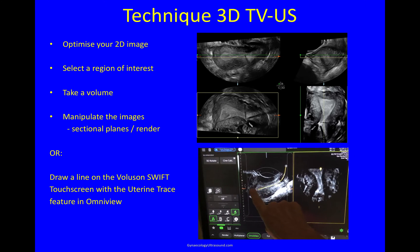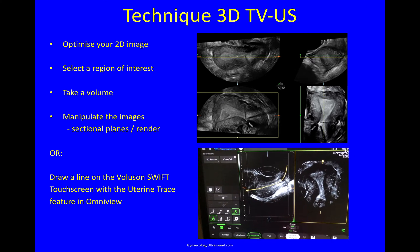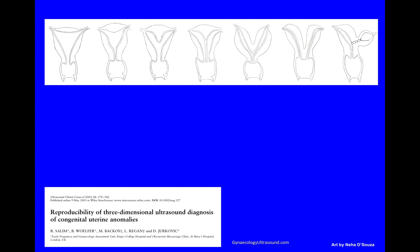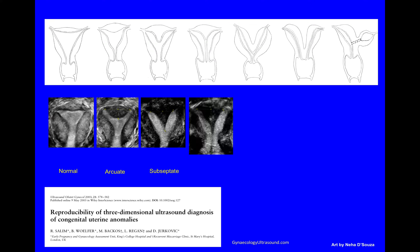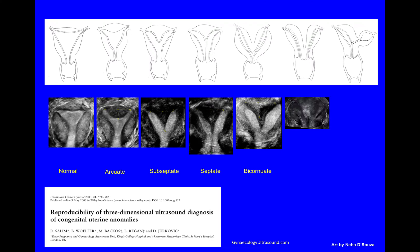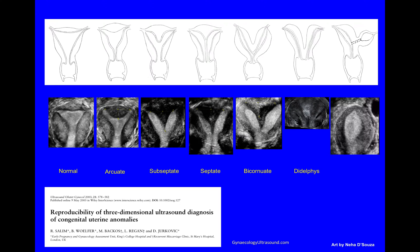There's the longitudinal view of the uterus and there is the coronal plane. Which classification system you use depends on your personal preference — there are many available. This is the one we use: here you can see a normal uterine cavity, an arcuate cavity, a subseptate uterus, a septate uterus where the septum goes all the way through the cervix and possibly the vagina, a bicornuate uterus, a uterus didelphys, and a unicornuate uterus with or without a rudimentary horn.